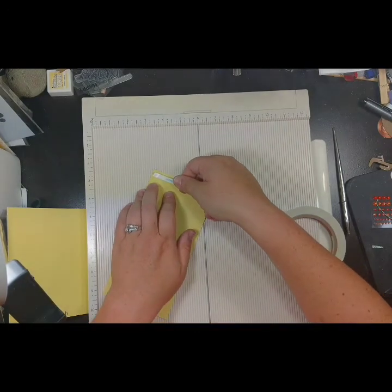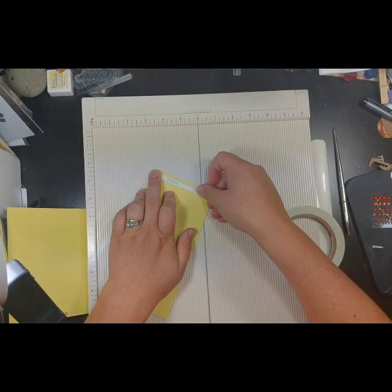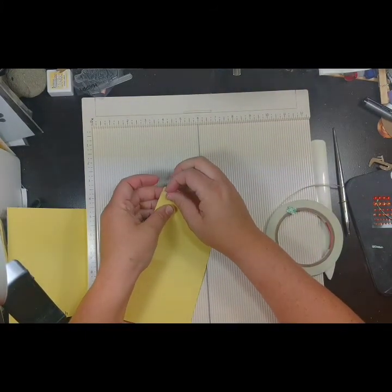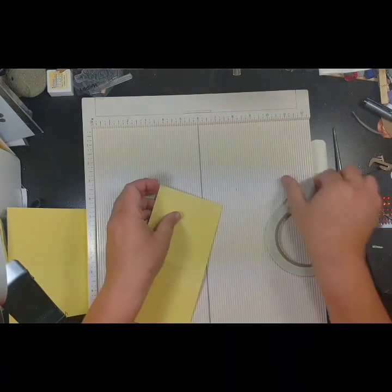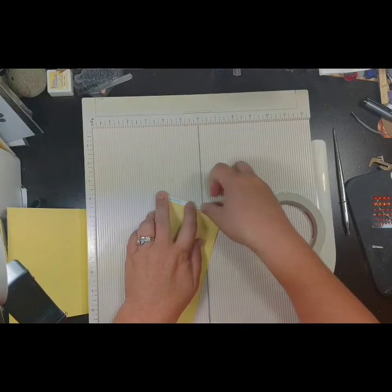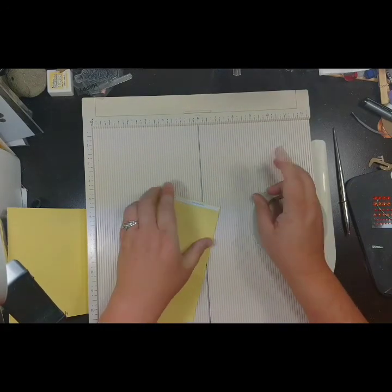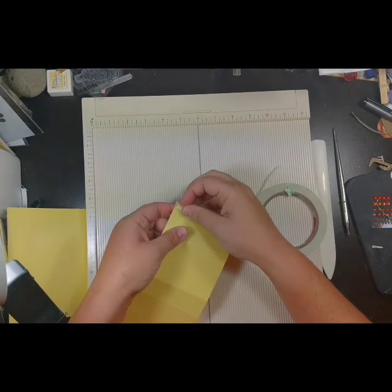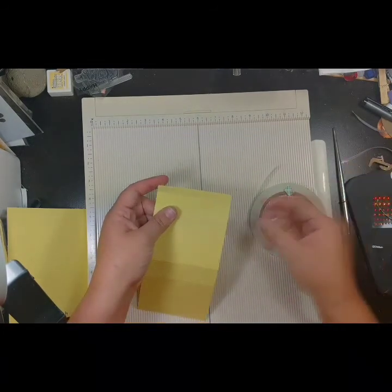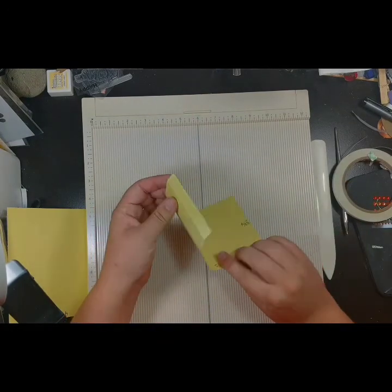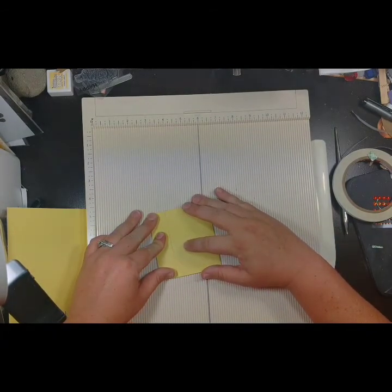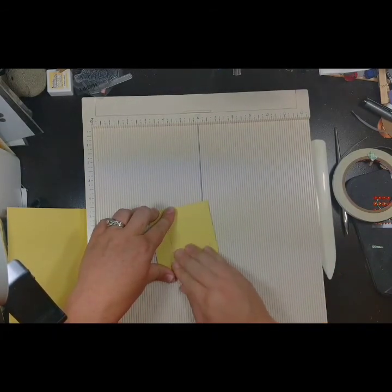Put adhesive along the thinnest section to adhere it to the other side of the panel. This will form the whole outer sleeve. I'm using tape in the video, but if you have a favorite liquid adhesive that won't warp your paper, feel free to use whatever you choose. Now you can see that the outer sleeve of the box is complete. It doesn't take much time at all once you have the dimensions of the papers.